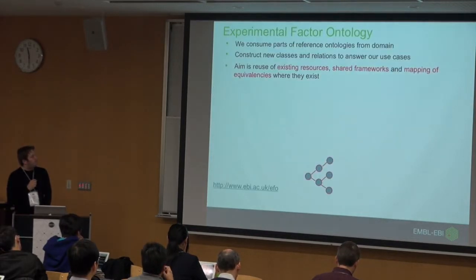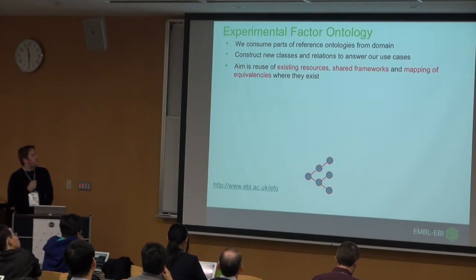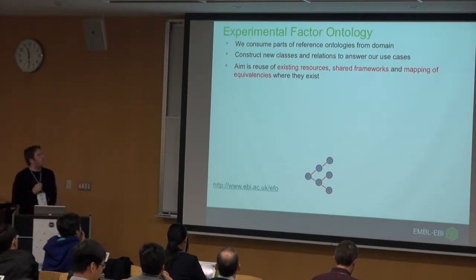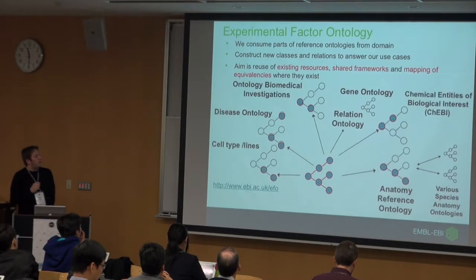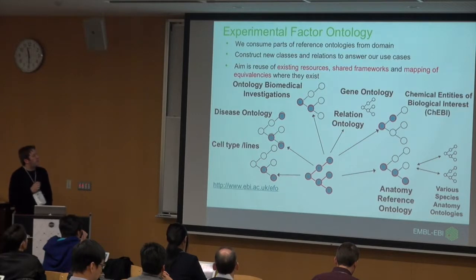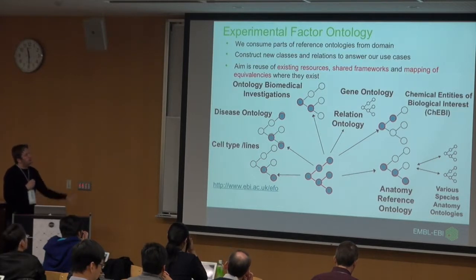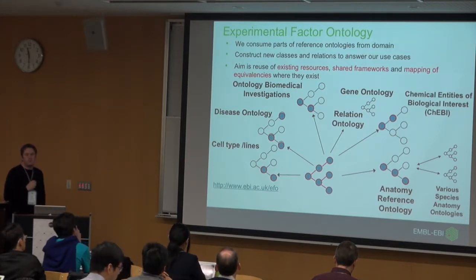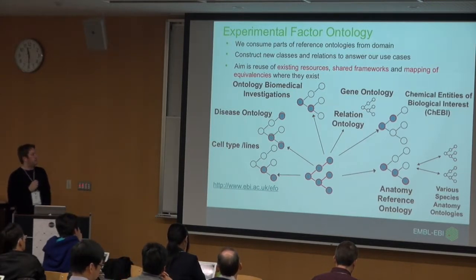The Experimental Factor Ontology is what we call an application ontology rather than a reference ontology — essentially the ontology for the EBI. It describes the data we have at EBI, and rather than ignoring other ontology efforts, EFO allows us to build a view across all these external ontologies for the data we need to annotate and the applications we need to build.